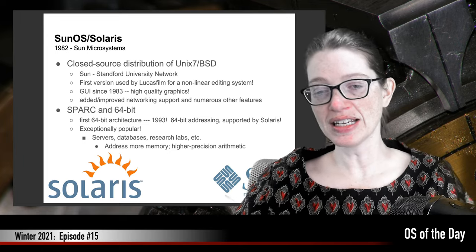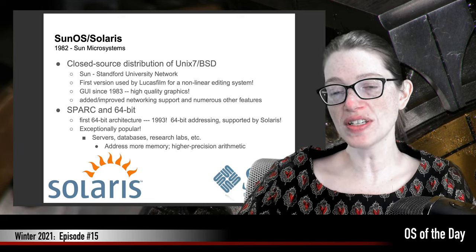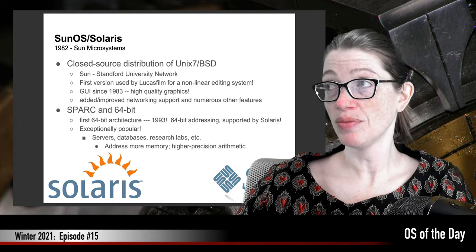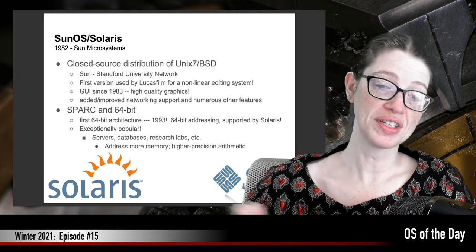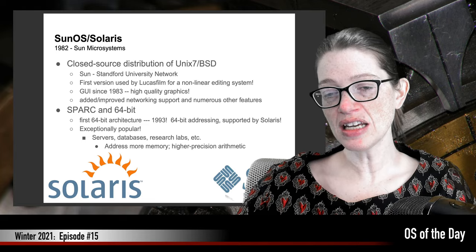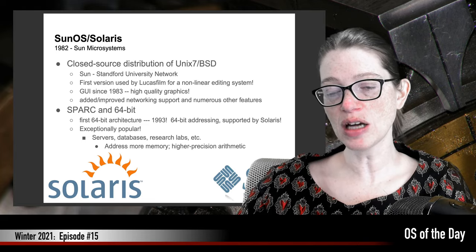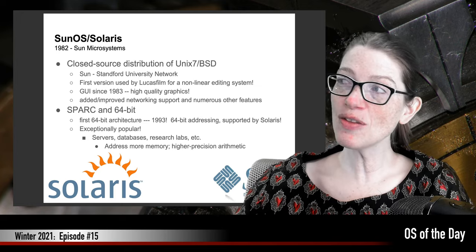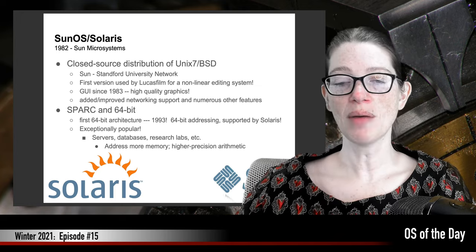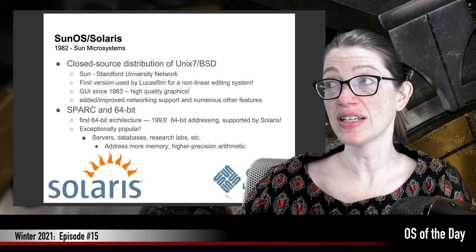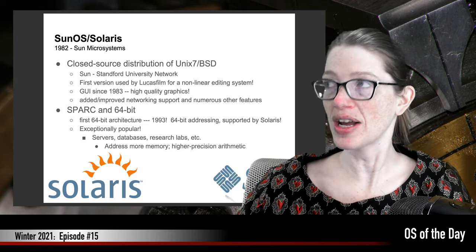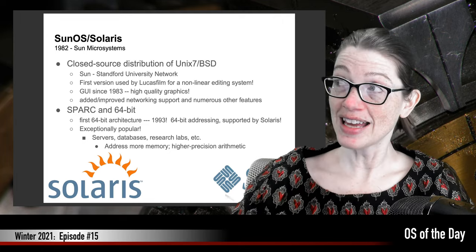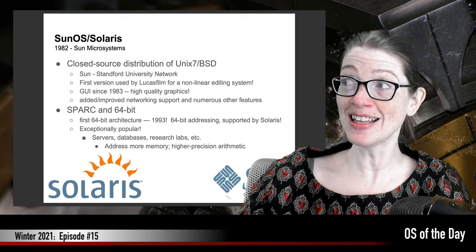Solaris was actually a closed source distribution of BSD — so it wasn't an open source thing where you could actually patch. And it had a desktop GUI since about 1983. The graphics were actually pretty good for 1983, which is why companies like Lucasfilm were actually using it — well, SunOS then — for doing non-linear editing. So digital editing. Yes, people did digital editing back in the early 80s.